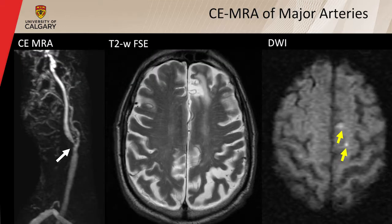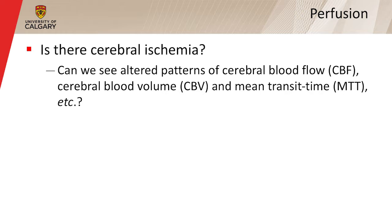Contrast-enhanced MR angiography, particularly for the carotid arteries, is a very powerful technique. Here's an example similar to what Dr. Mackey showed: a carotid artery stenosis on the left, T2 images that look unremarkable, and diffusion-weighted images pointing to a few tiny bright spots in the brain — likely the result of an embolic shower originating from that carotid artery.